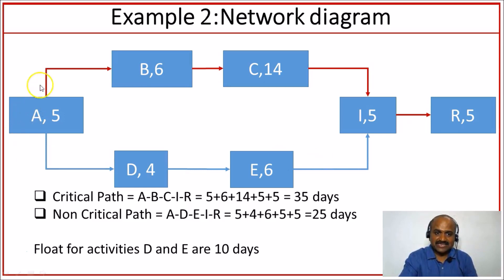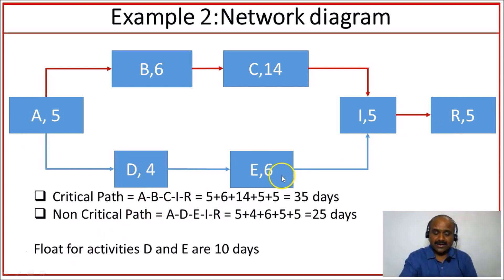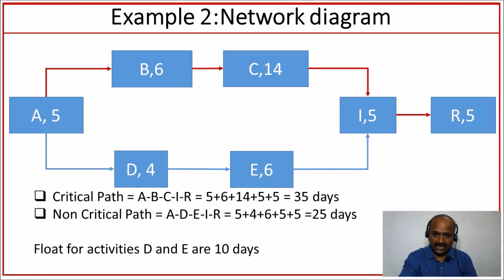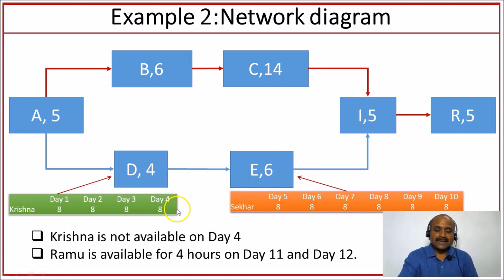The critical path is A, B, C, I, and R. The non-critical path is A, D, E, I, and R. The float available for activities D and E is 10 days — meaning even if you delay Activity D or Activity E by 10 days, the overall project duration will not be impacted. It is planned that Krishna works on Activity D for 4 days and Shaker works on Activity E for 6 days.